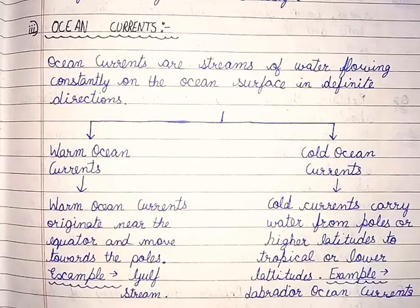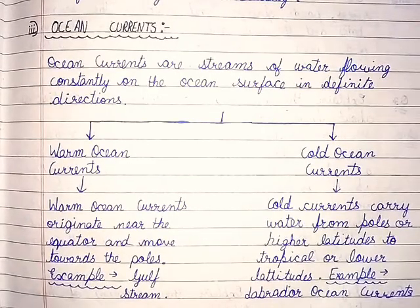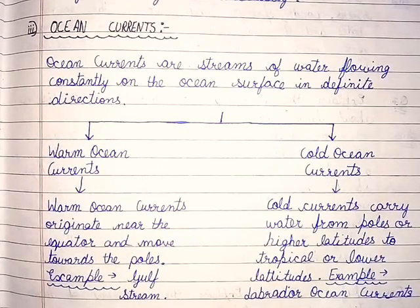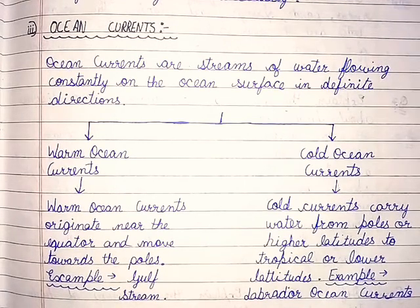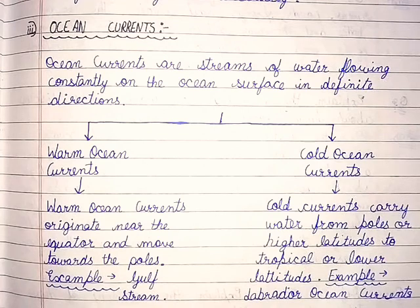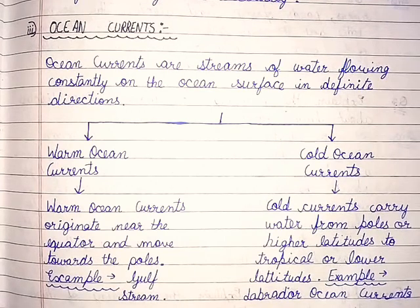Ocean currents are streams of water flowing constantly on the ocean surface in definite directions. Warm ocean currents originate near the equator and move towards the poles — for example, the Gulf Stream. Cold currents carry water from poles or higher latitudes to tropical or lower latitudes — for example, the Labrador current.